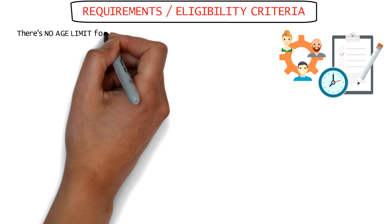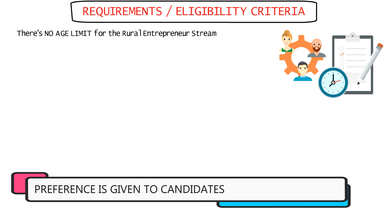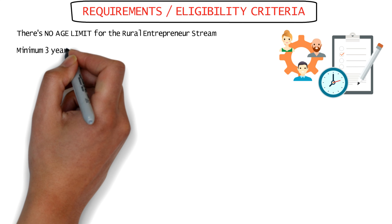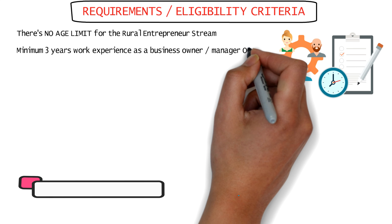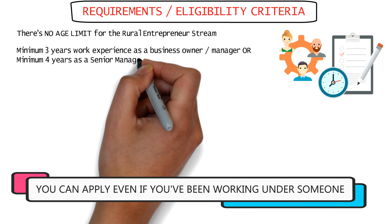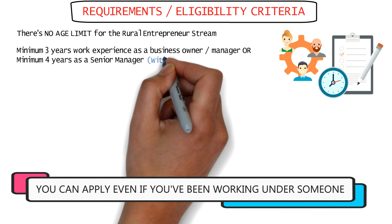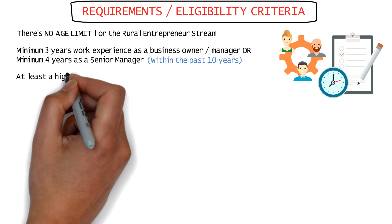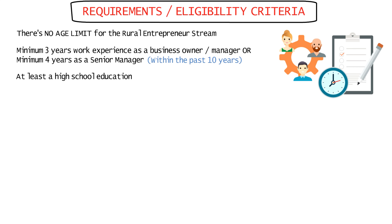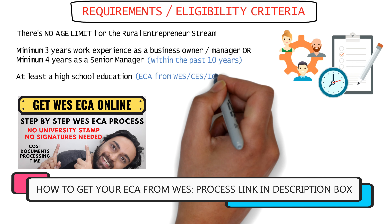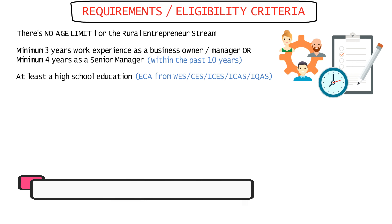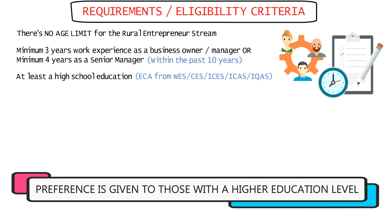There's no age limit as such, but ideally invitations are more likely if you're between 21 to 49 years. You need to have either a minimum three years of experience as an active business owner or manager, or a minimum of four years of experience as a senior manager in your company within the past 10 years. You need to have at least a high school education and you'll need an ECA, or Education Credential Assessment, from WES or any other designated evaluation service.